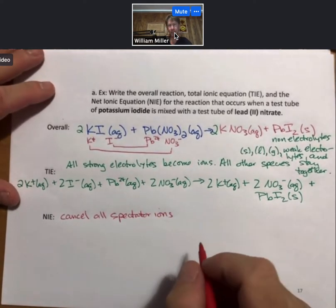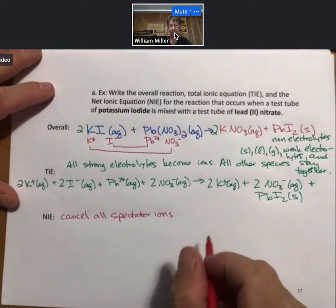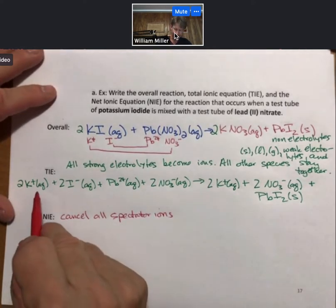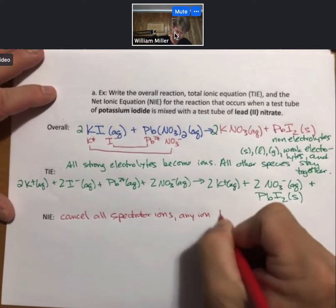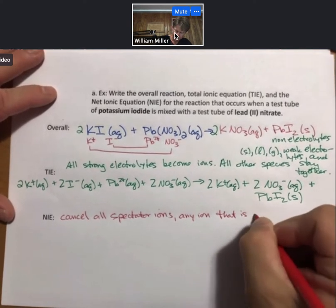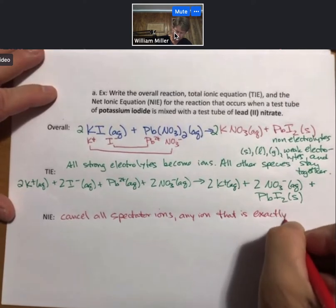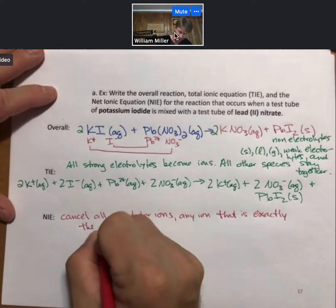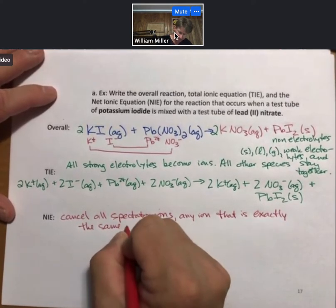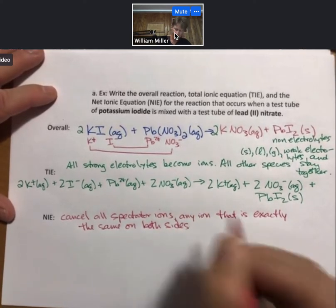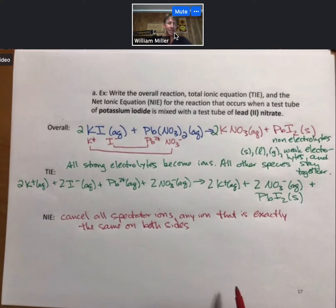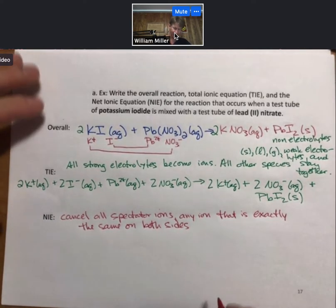And a spectator ion is any ion that is exactly the same on both sides. And that just means there are spectators. They watched what was going on. They did not participate in the reaction.